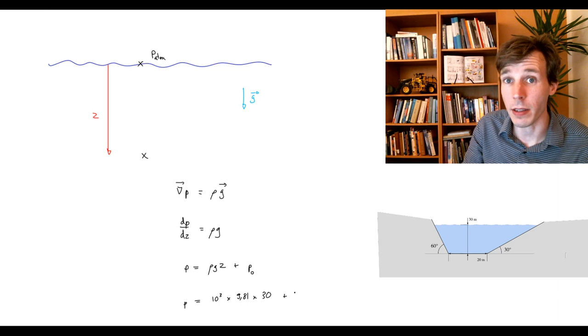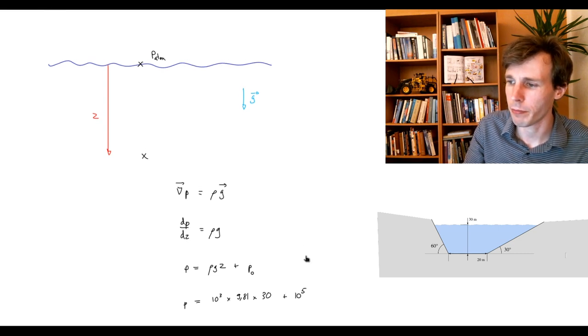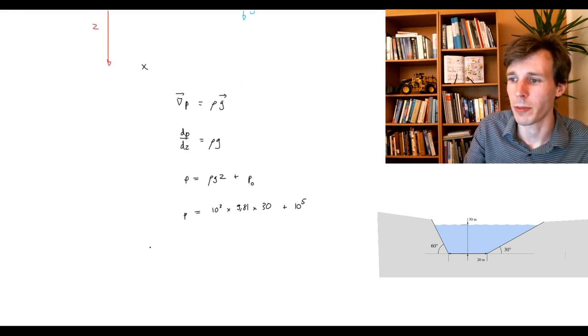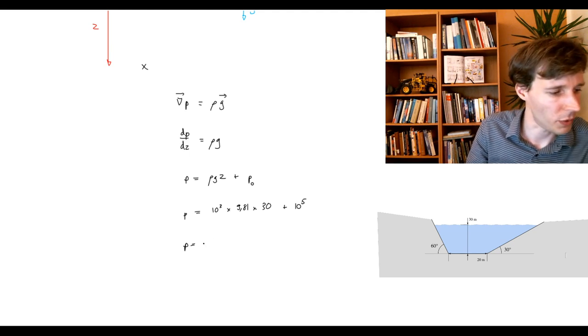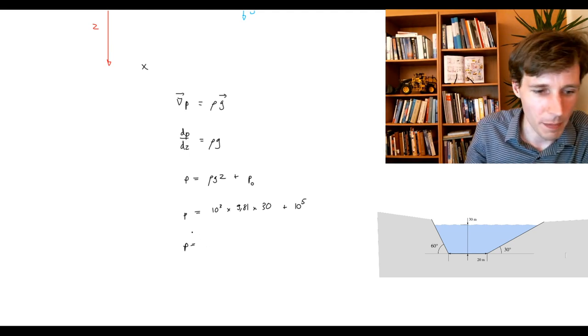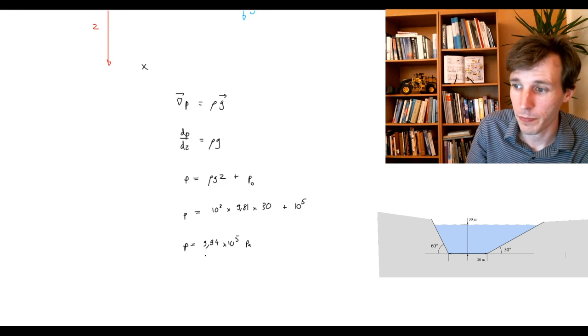And then you add pressure atmospheric, which is one bar, which turns out to be 10 to the power of 5 pascals. If you calculate it, it gets you precisely 3.94 times 10 to the power of 5 pascals.